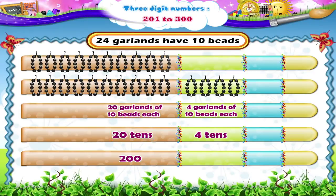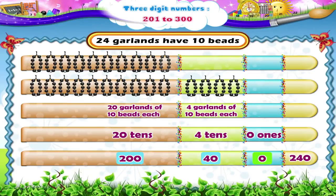20 tens means 200. 4 tens means 40. Do we have any garlands with less than 10 beads? No. So there are 0 ones. Thus, the number formed is 240.